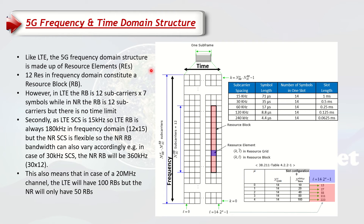Let's have a look at how the 5G structure looks like. This is one frame grid — in the time domain we have symbols, while in the frequency domain we have subcarriers. If we look at one symbol and one subcarrier together, that one small square is known as a resource element — that is the smallest unit we can talk about in 5G.